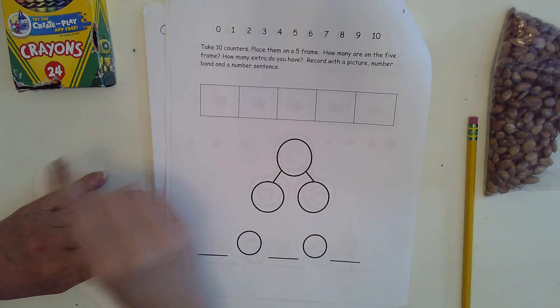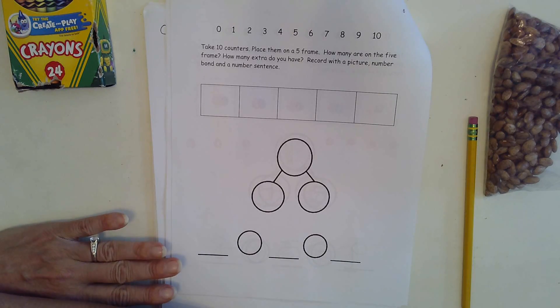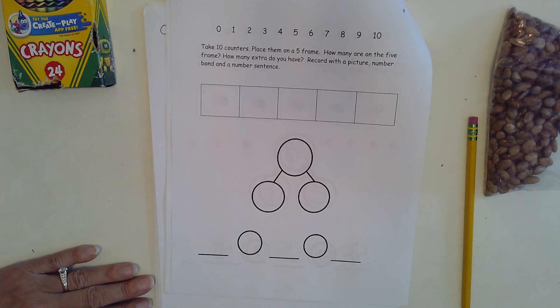Now let's read the directions. Take ten counters, place them on a five frame. How many are on the five frame? How many extra do you have? Record with a picture, number bond, and number sentence.